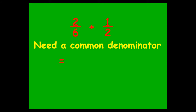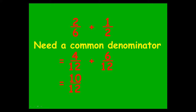Two sixths plus one over two — you could choose a common denominator of twelve. Scale two sixths up to something over twelve by doubling top and bottom to get four twelfths. Scaling one half up, you times top and bottom by six to get six twelfths. You end up with ten over twelve, which can be simplified by dividing top and bottom by two to get a final answer of five sixths.